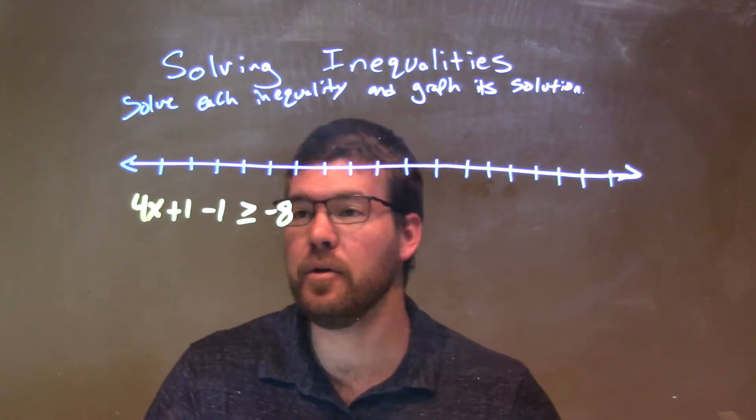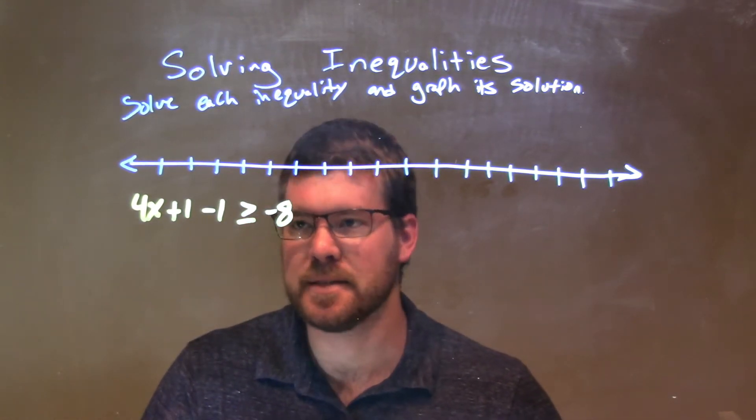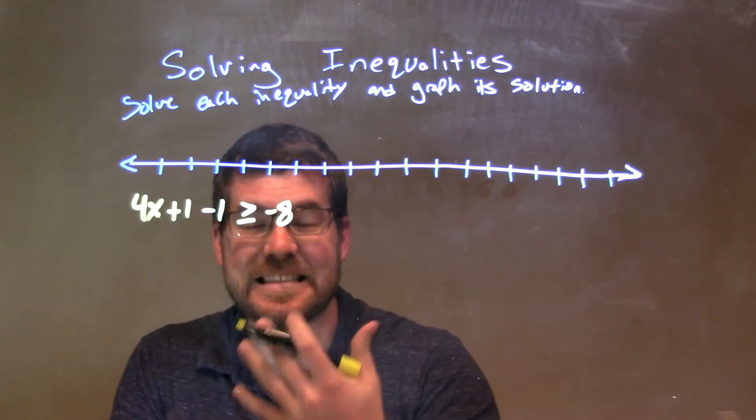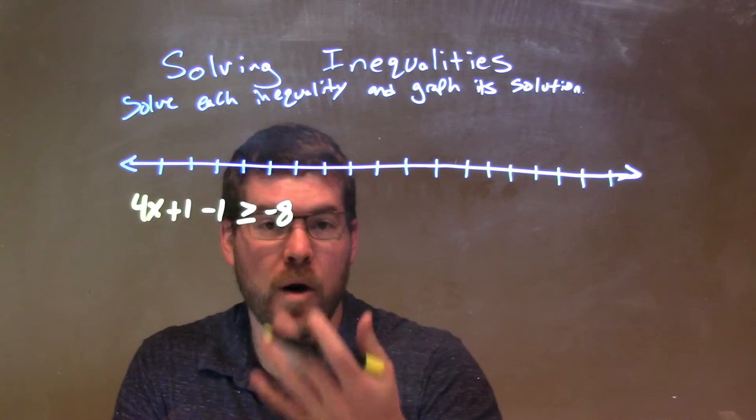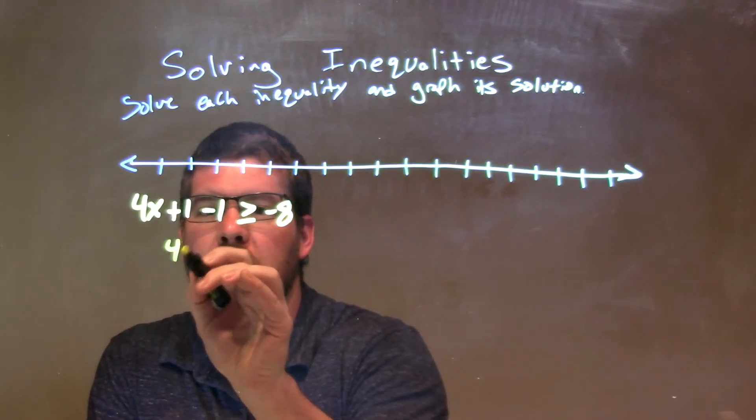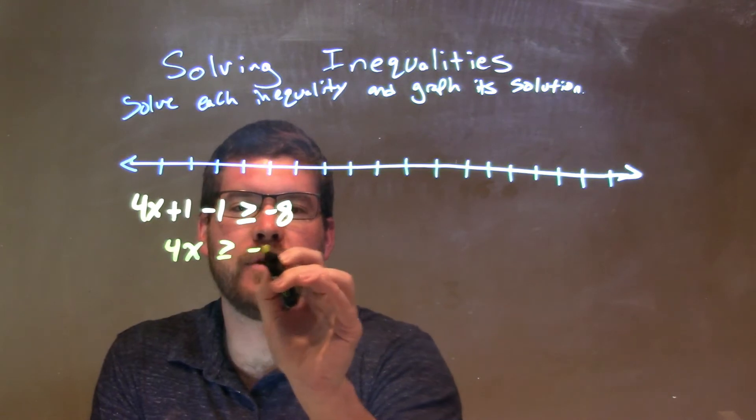Well, what I want to do here now is I want to get x by itself. I see the 1 minus 1 right there. I can see that's going to cancel itself out. 1 minus 1 is 0, so I'm just going to eliminate that. My 4x now is greater than or equal to negative 8.